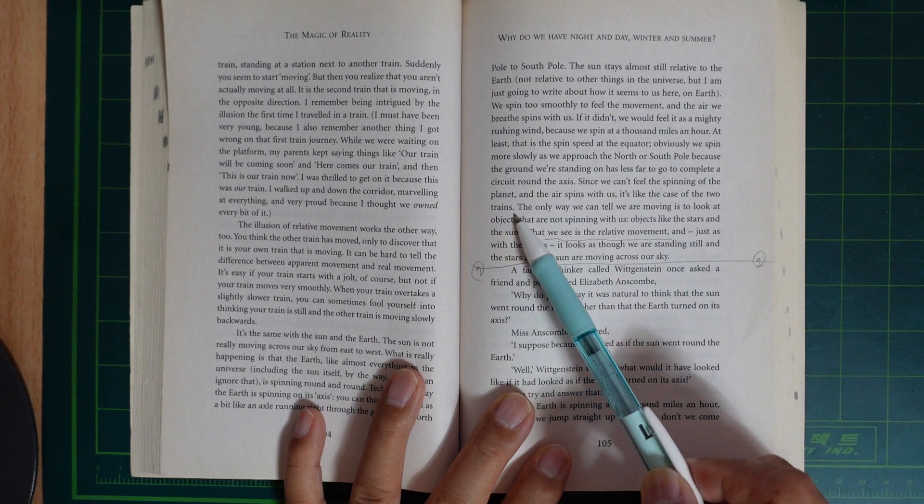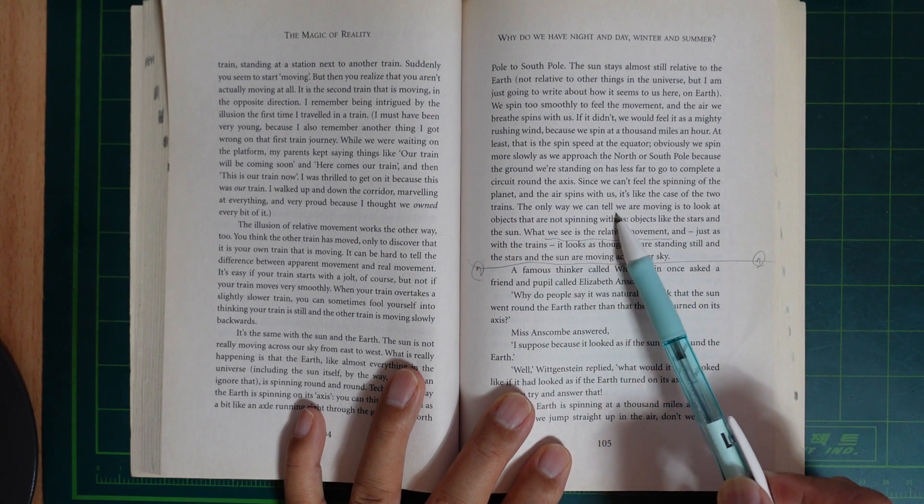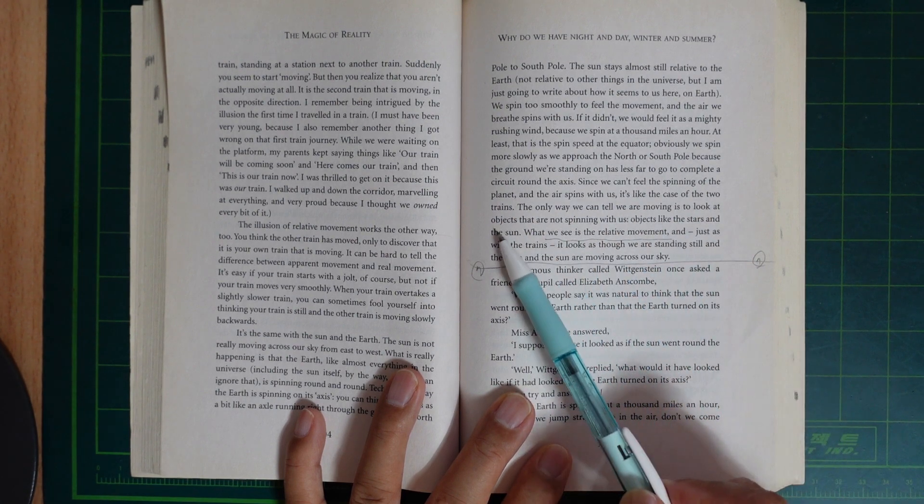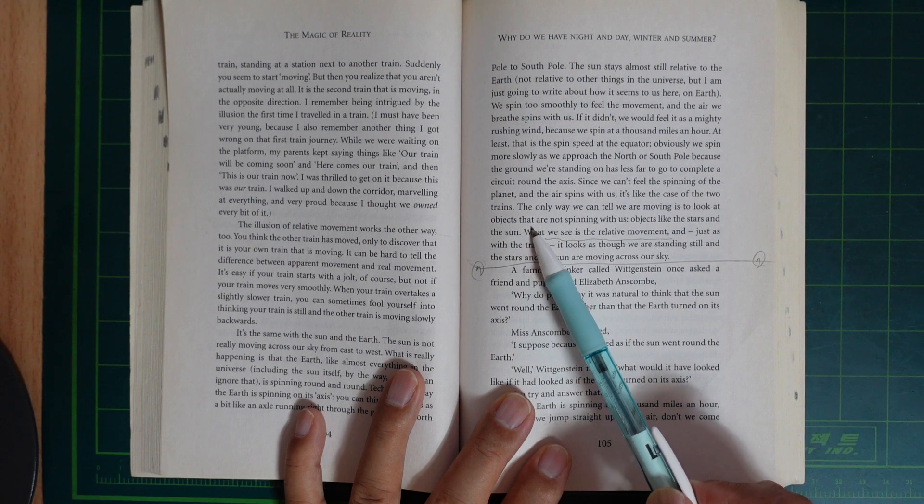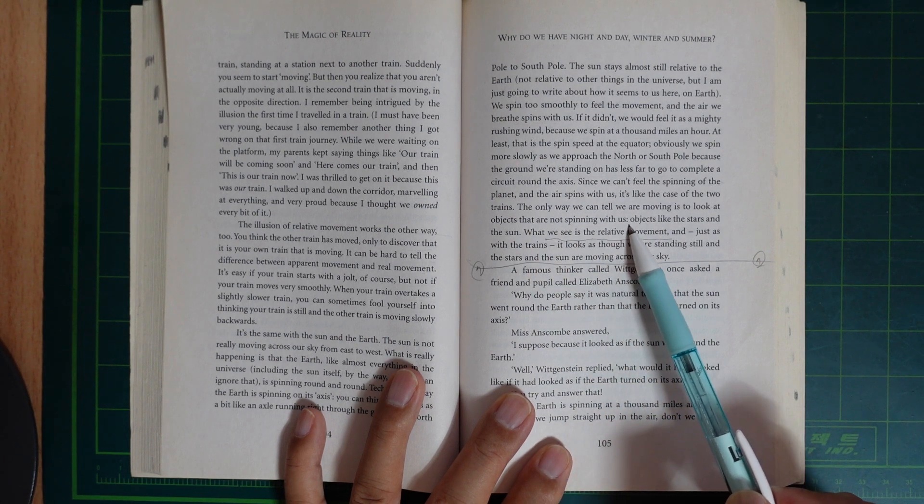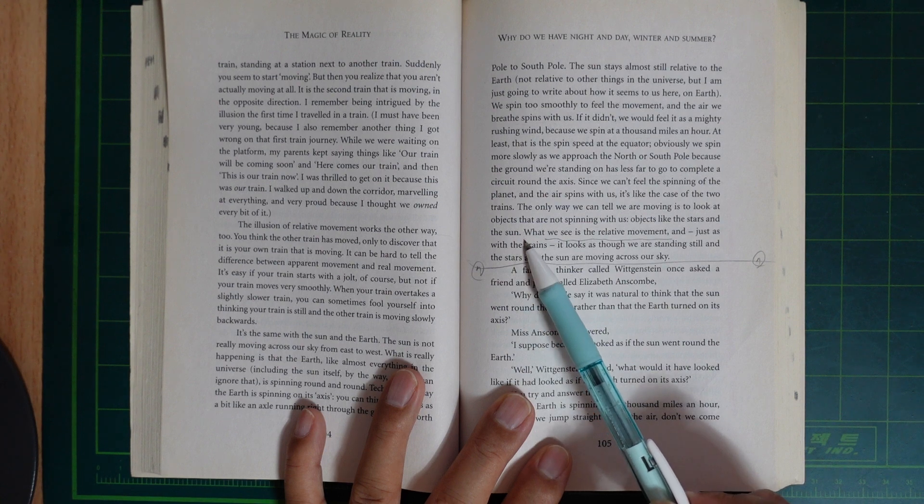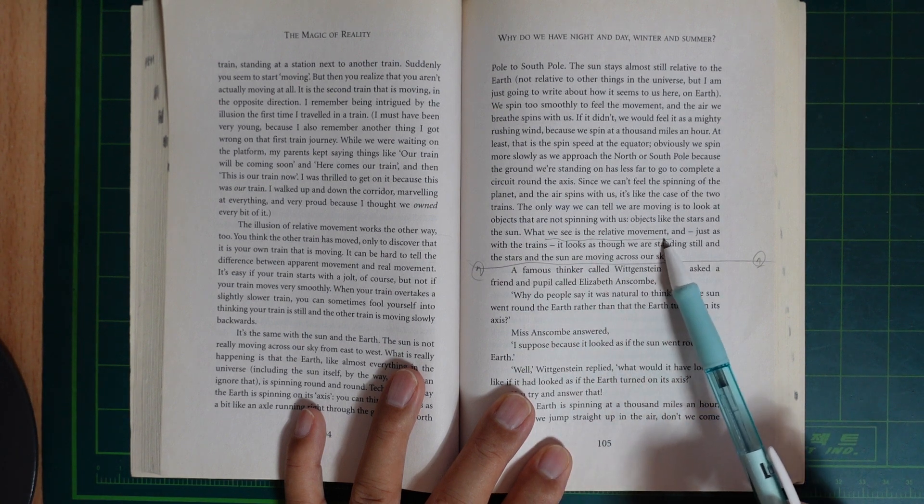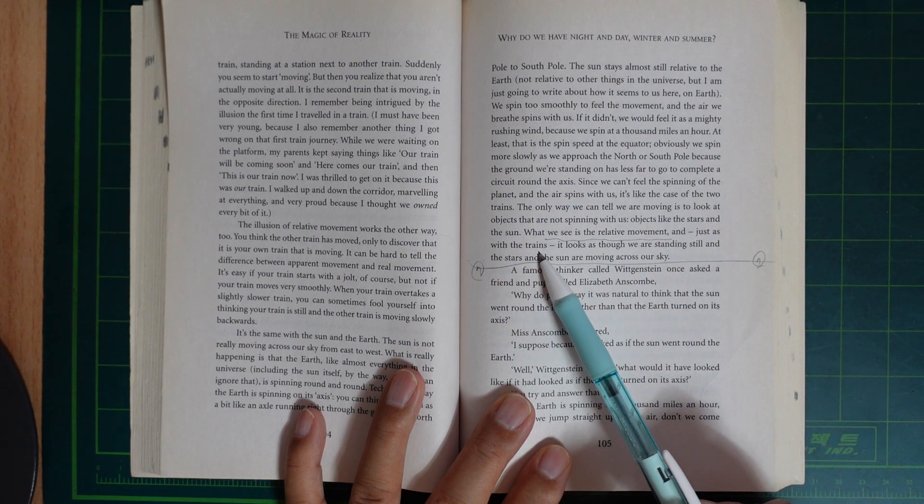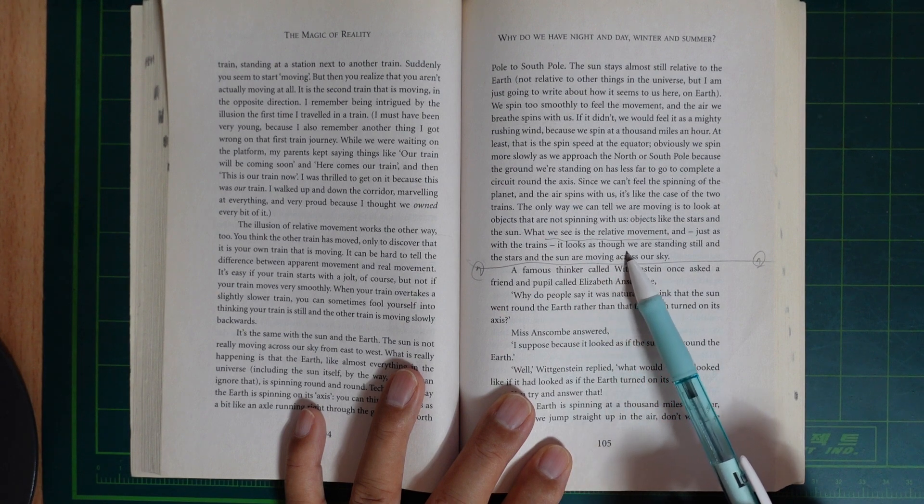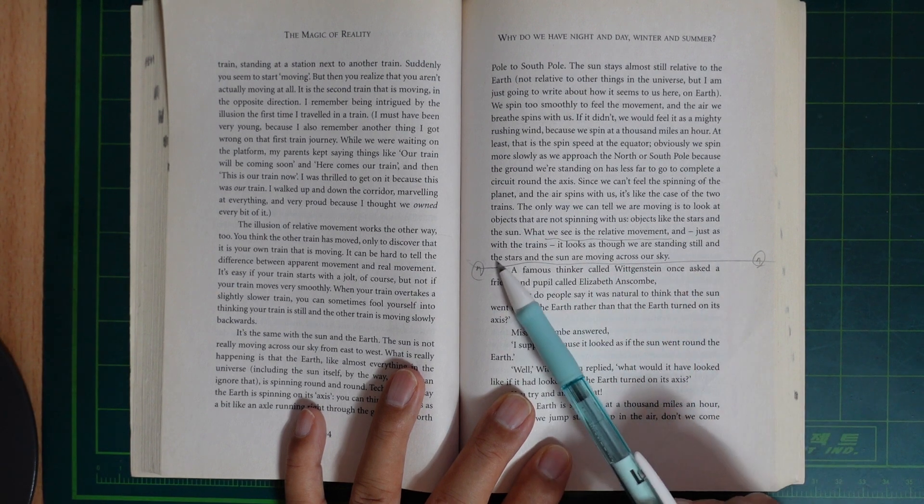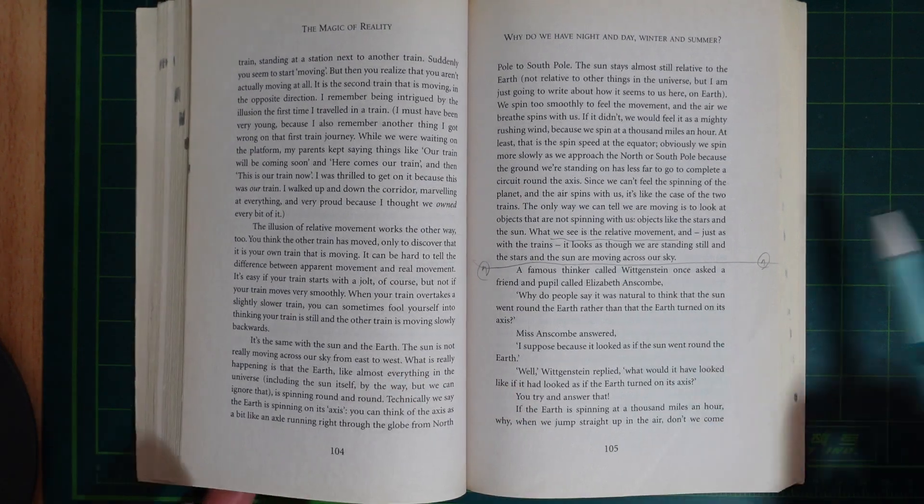The only way we can tell we are moving is to look at objects that are not spinning with us. Objects like the stars and the sun. When you see the relative movement, and just as with the train, it looks as though you are standing still and the stars and sun are moving across our sky.